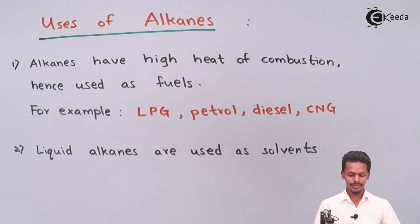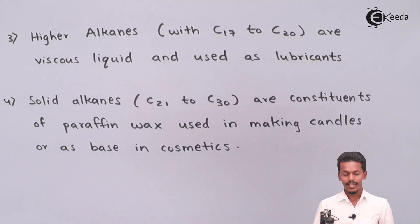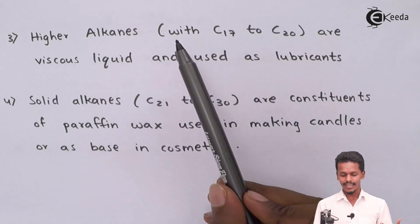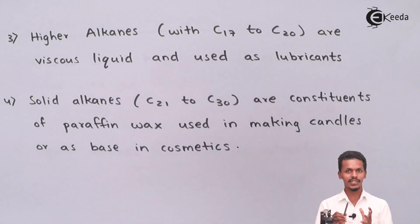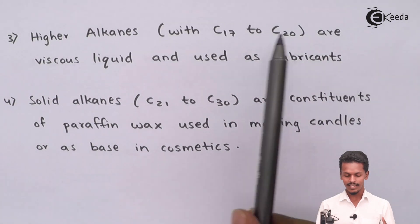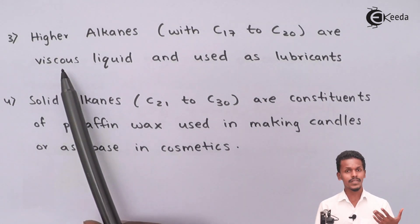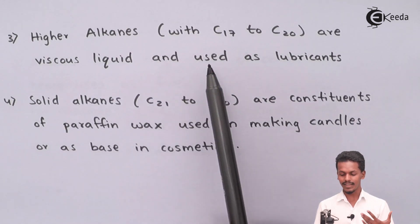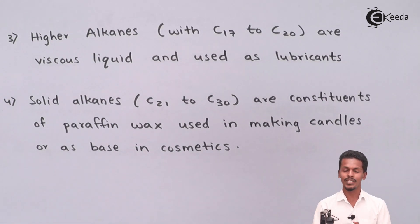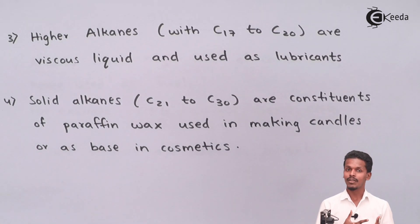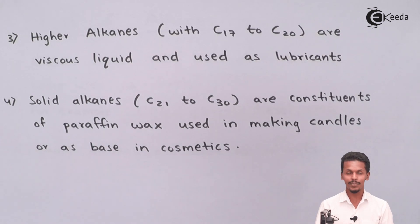The higher alkanes, ranging from carbon number C17 to C20, are present as viscous liquids — a viscous liquid being a semi-solid or gel-like substance — and these are used as lubricants. Lubricants play a very vital role in automobiles, machines, and various other applications.